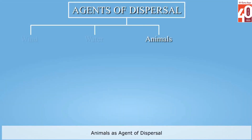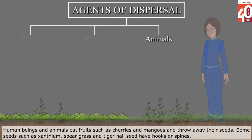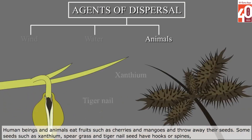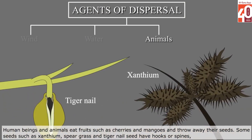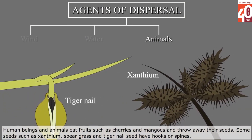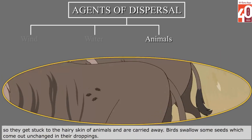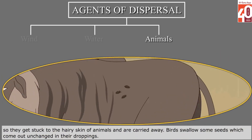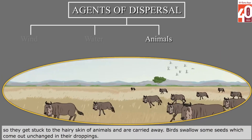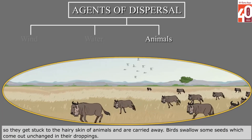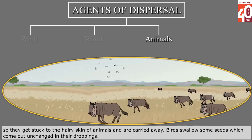Animals as agents of dispersal: Human beings and animals eat fruits such as cherries and mangoes and throw away their seeds. Some seeds such as xanthium, spear grass and tiger nail seed have hooks or spines, so they get stuck to the hairy skin of animals and are carried away. Birds swallow some seeds which come out unchanged in their droppings.